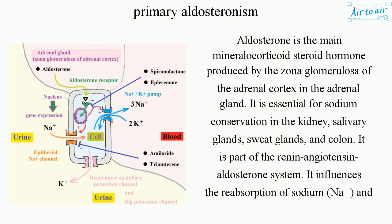Aldosterone is the main mineralocorticoid steroid hormone produced by the zona glomerulosa of the adrenal cortex in the adrenal gland. It is essential for sodium conservation in the kidney, salivary glands, sweat glands, and colon. It is part of the renin-angiotensin-aldosterone system and influences the reabsorption of sodium (Na+) and excretion of potassium (K+) in the kidney.